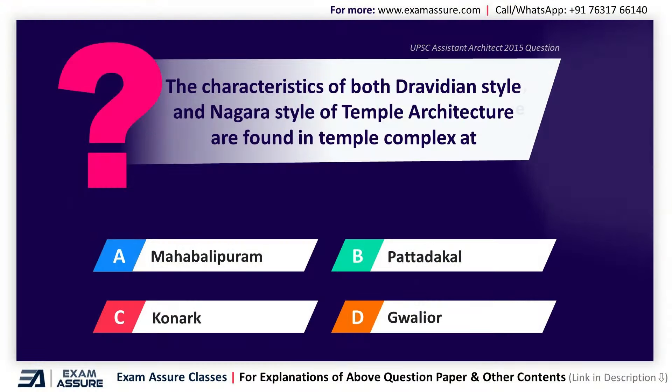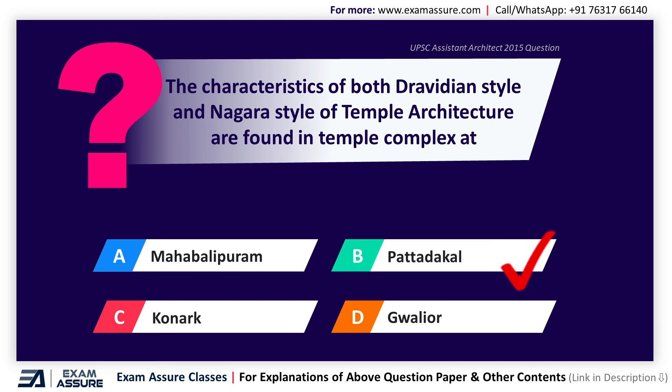Next question. The characteristics of both Dravidian and Nagara style of a temple are found in the temple complex at — Option A: Mahabalipuram, Option B: Pattadakal, Option C: Konark, Option D: Gwalior. The correct answer is Option B, Pattadakal.